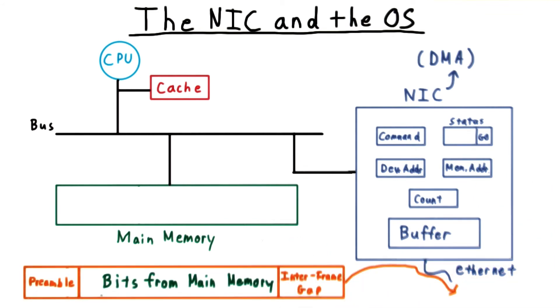The NIC controller is also responsible for putting hardware-specific headers and footers on the data. For physical Ethernet, this would include an inter-frame gap of silence and a special preamble to indicate the start of a frame.